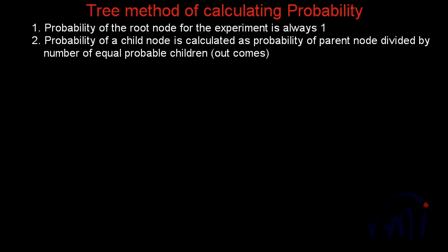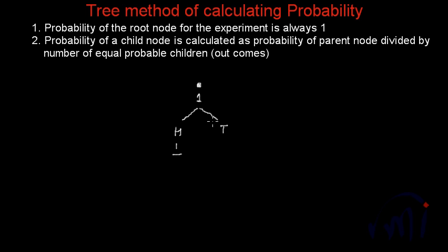The first example we are going to take is tossing a coin. First we will draw the parent node and the probability of it will be one. Then if we toss the coin we are going to get a head or a tail, and both these outcomes are equally probable, so their probability will be one divided by the number of equal probable outcomes, which are two — one is head and another is tail.